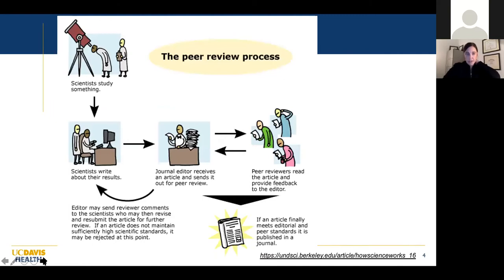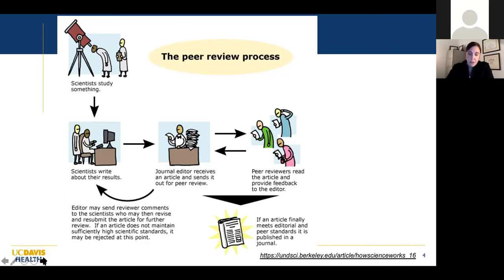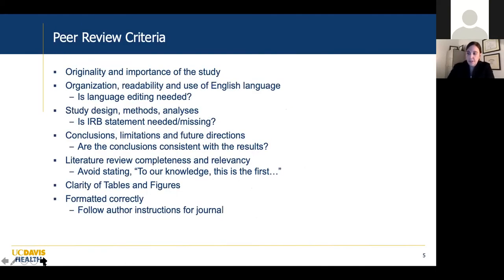The peer review process, as you're all well aware: scientists study something, write it up, and submit it to a journal. That manuscript goes straight to the editor, who then sends it out for peer review. Typically it goes to an associate editor, who assigns it to several reviewers. The reviewers read the article and provide their feedback to the editor. The editor reviews all the peer reviews, makes a decision, and sends it back to the authors. Most of the time, the recommendation is to revise the manuscript and resubmit. Then hopefully it eventually gets published.